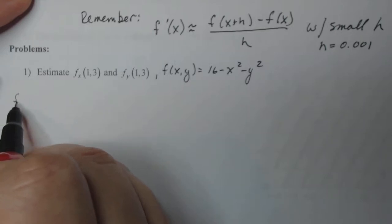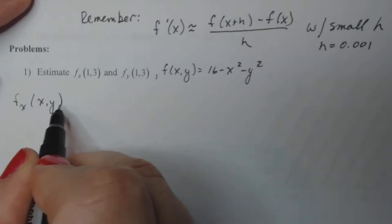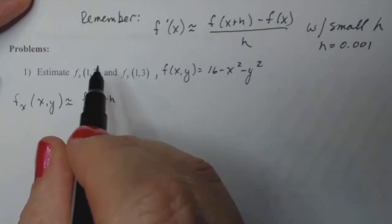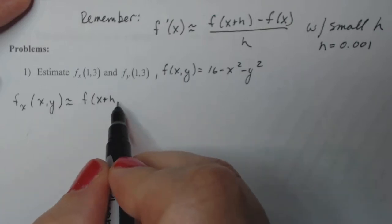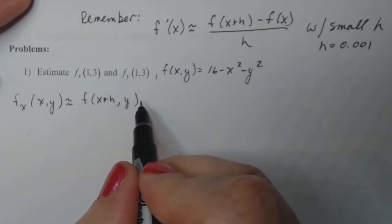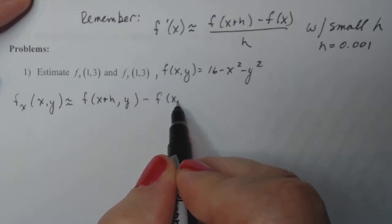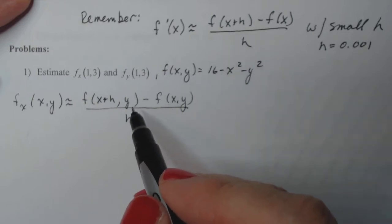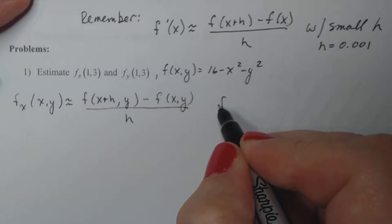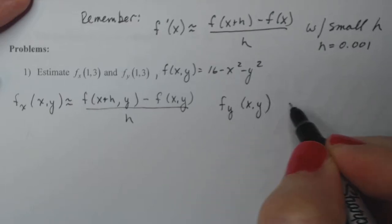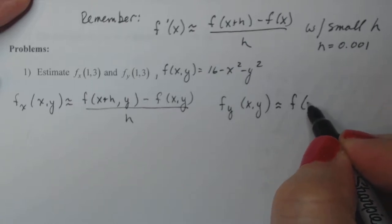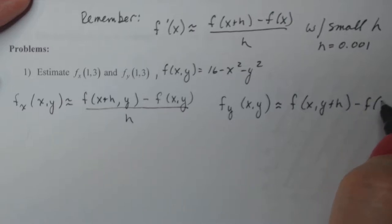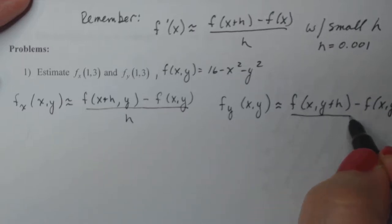In general, if I want to estimate f sub x at any point, I use the difference quotient: f(x+h, y) minus f(x,y) divided by h. Very similar — I just have that extra y in there. And if I want to do f sub y, it's f(x, y+h) minus f(x,y) all over h, because y is the one that's moving around.